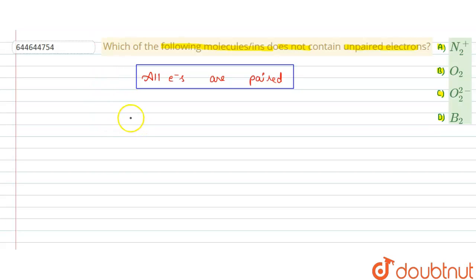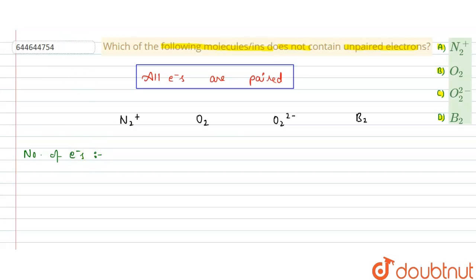First, we list all the species: N₂⁺, O₂, O₂²⁻, and B₂. Now we write the number of electrons in each. N₂⁺ has 7×2 = 14, minus 1, so 13 electrons. O₂ has 16 electrons. O₂²⁻ has 16 + 2 = 18 electrons. B₂ has 10 electrons.